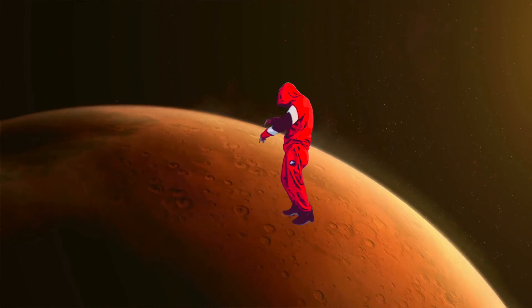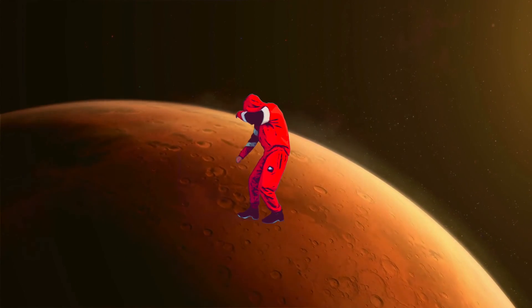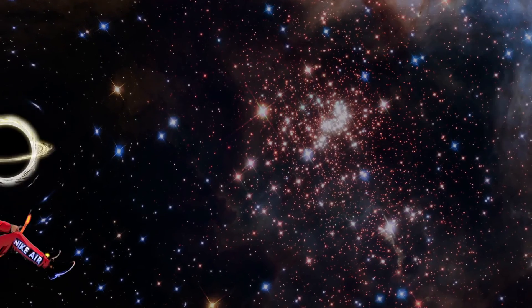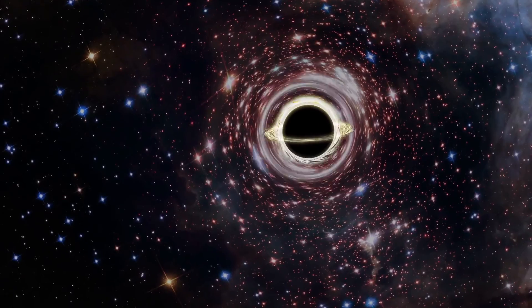When giant stars die, they leave a hole in space. The gravitational pull so strong, not even the light escapes. Altering the galaxies, you won't believe the time it takes. The closest one to Earth is just 1500 light years away.